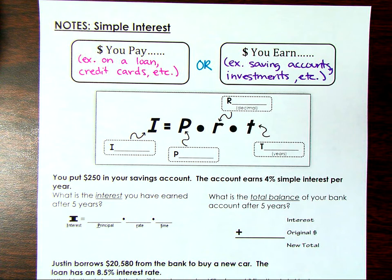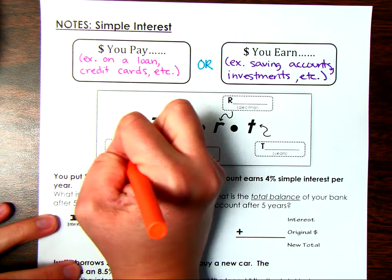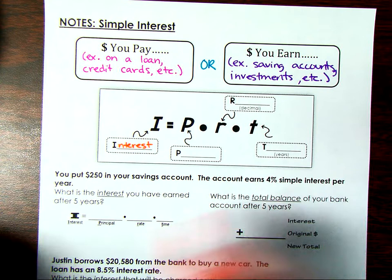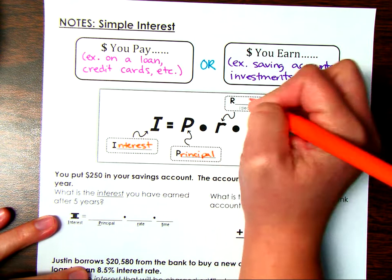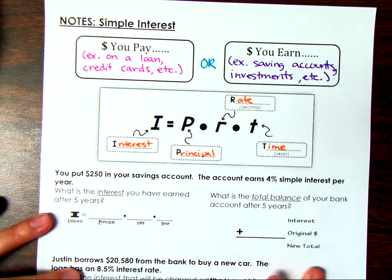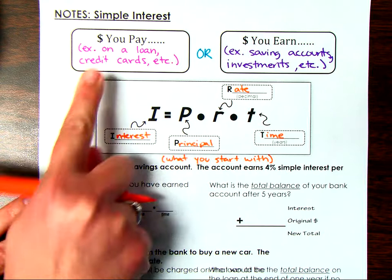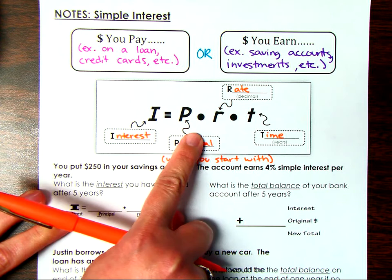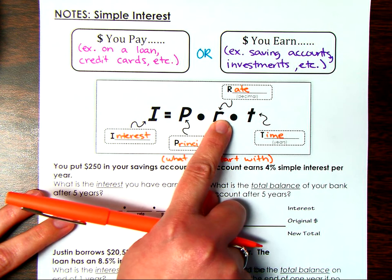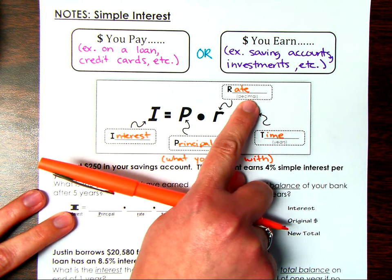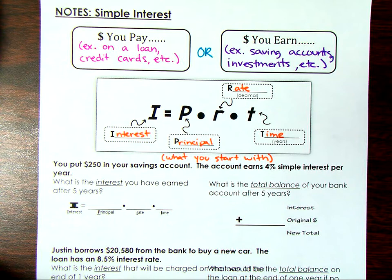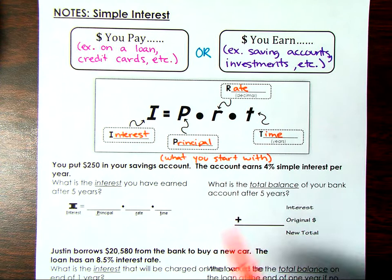Let's talk about how we solve for interest. I stands for interest, and interest is found by taking our principal, multiplied by our rate, and multiplied by our time. The principal is what you start with — for example, a car loan for twenty-five thousand dollars. We multiply by the rate, such as four and a half percent, but we need to change that percent to a decimal. The time always has to be in years, so the rate must be a decimal and time must be in years.